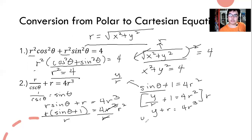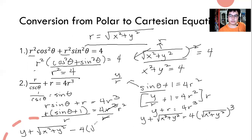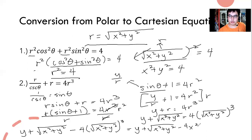We don't convert y since it's already Cartesian. But for r, we substitute the square root of x squared plus y squared. For r cubed, we substitute x squared plus y squared under the square root, raised to the power of 3. Simplifying, the final answer becomes: y plus the square root of x squared plus y squared minus 4 times the square root of x squared plus y squared, raised to the power of 3.